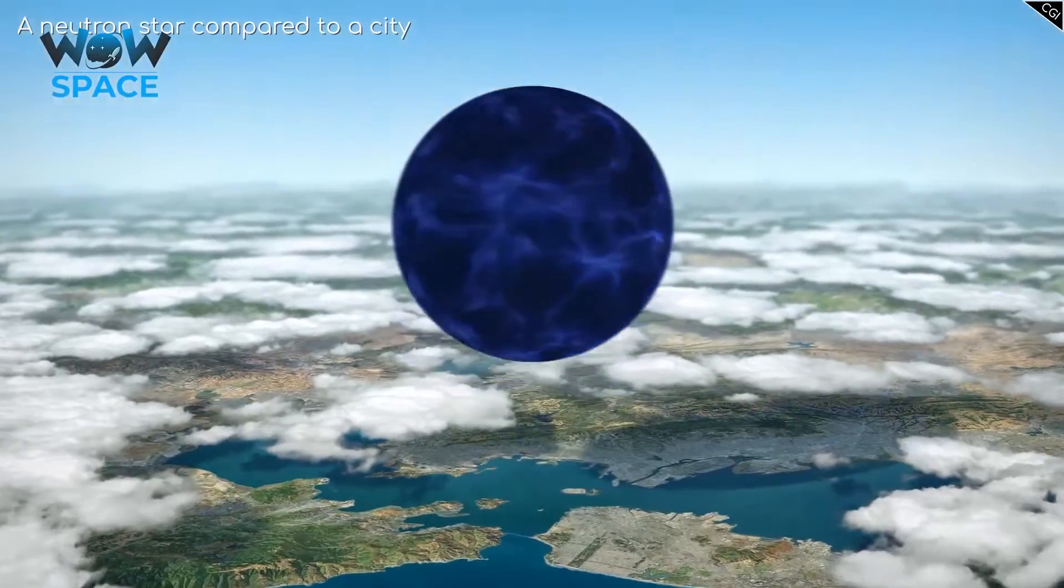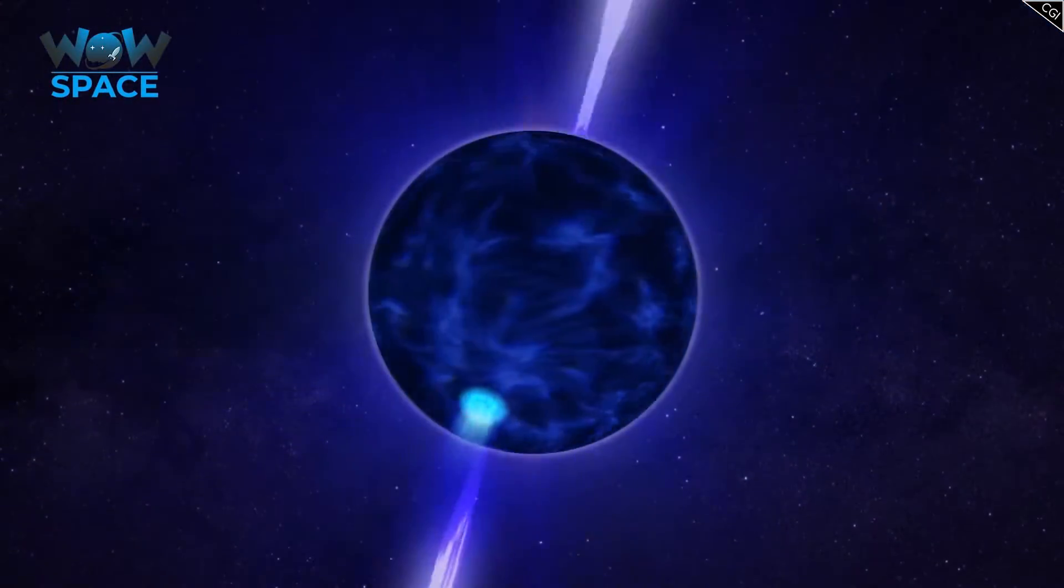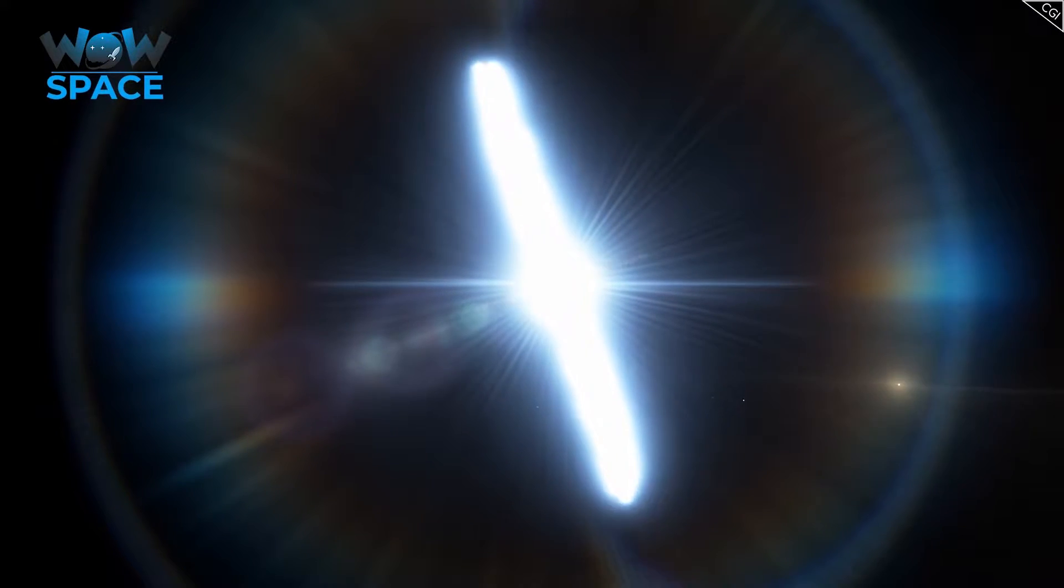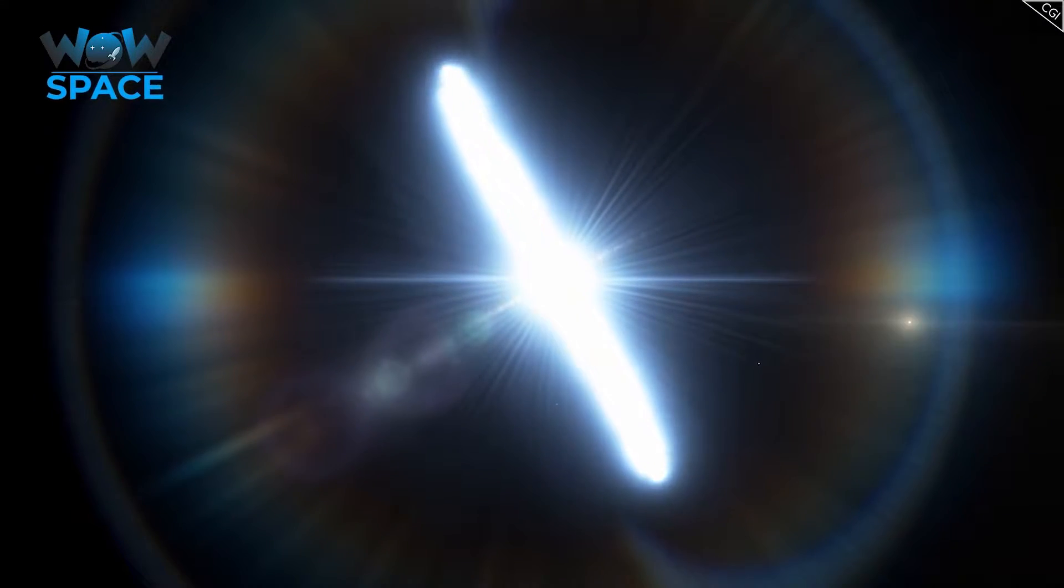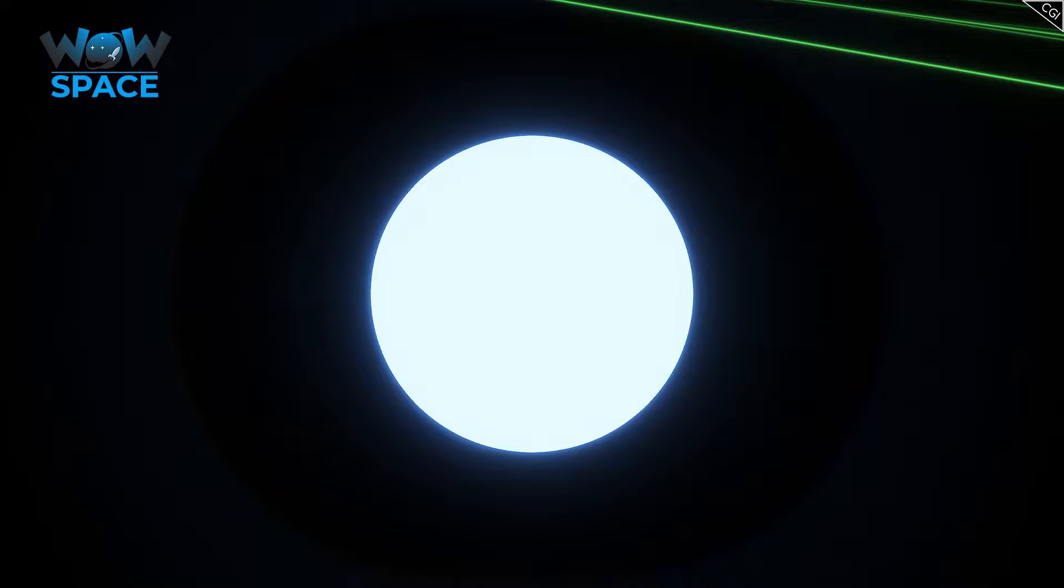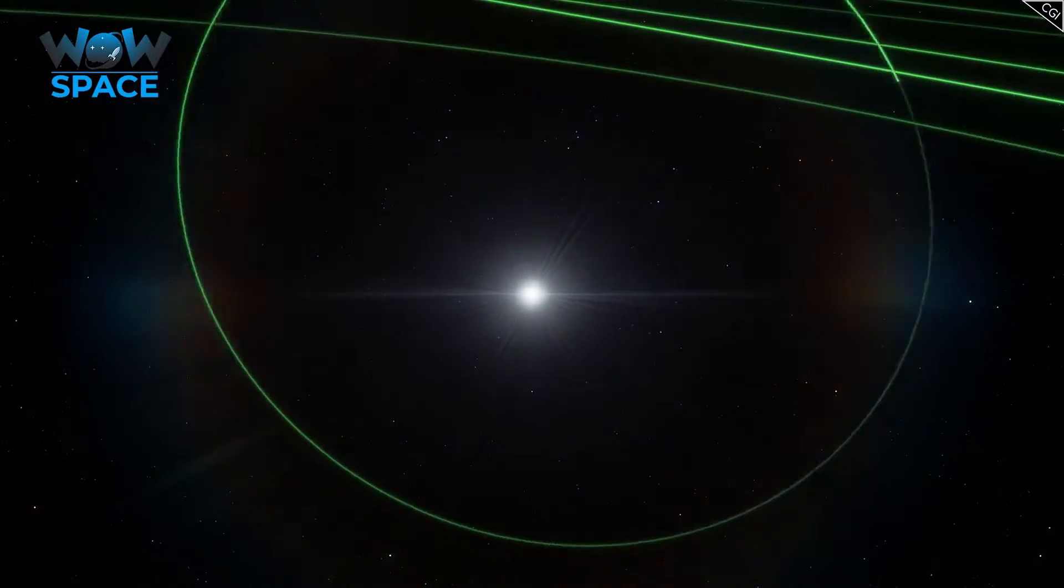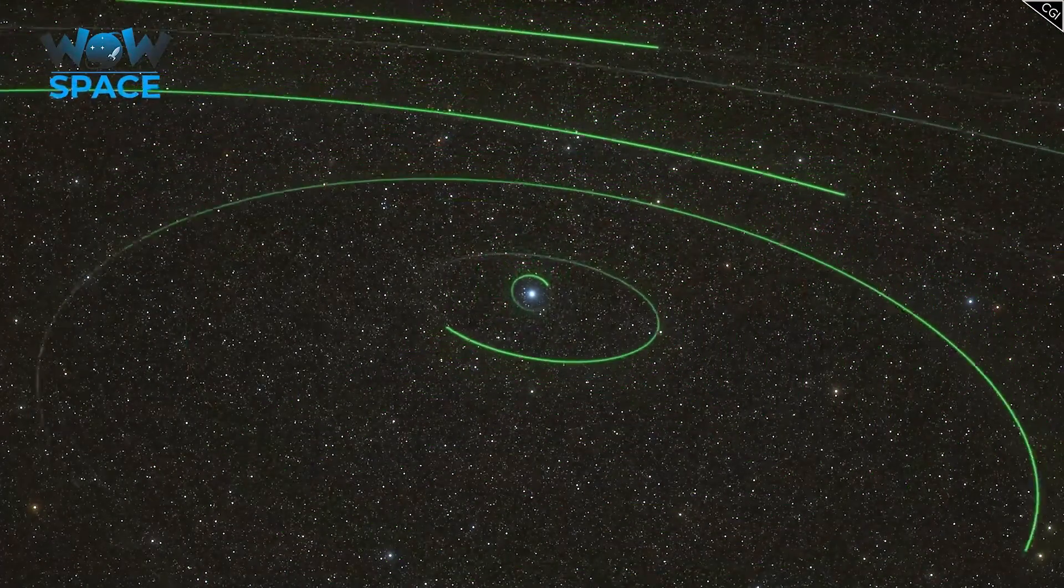While these stars are tiny volume-wise, they easily have enough mass to host a grand solar system that could stretch far beyond our own. We have discovered exoplanets around neutron stars. However, due to the detection method used to discover them, we can only really define their mass, not their radius.